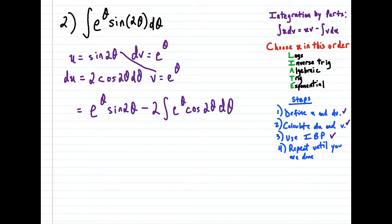And once again, we have another problem — this is an integral that we cannot just quickly evaluate. So what we're going to have to do here is apply integration by parts again. We have to repeat this until we are done. So I'm going to index this: I'm going to call the original terms u₁, dv₁, v₁, and du₁.